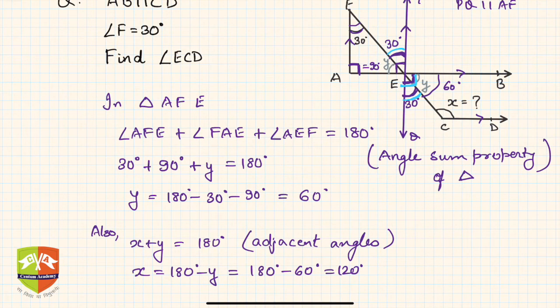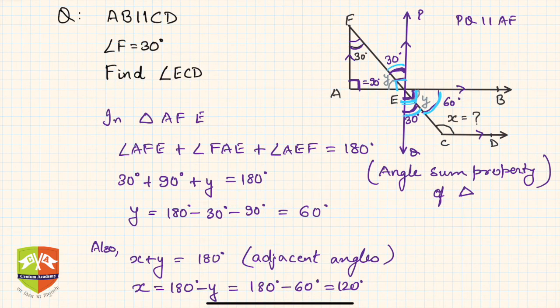The entire thing was 90, right? Why? Because this was 90 again by vertically opposite angles. So the total is 90, and this angle is 30, then the remaining has to be 60. So hence you could have solved it like this as well. There are multiple ways of solving the same problem.